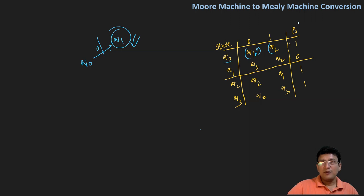If I'm moving from q0 to q2, the output associated with q2 state will be the output associated with that transition. Taking transitions from q1: q1 on zero goes to q3, so I will take the output associated with q3 and associate it here. Similarly, on q1 taking symbol one, it moves to q2, so whatever output is associated with q2 will be the output for this transition.